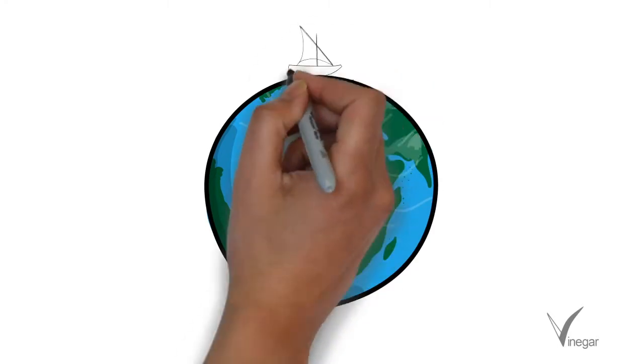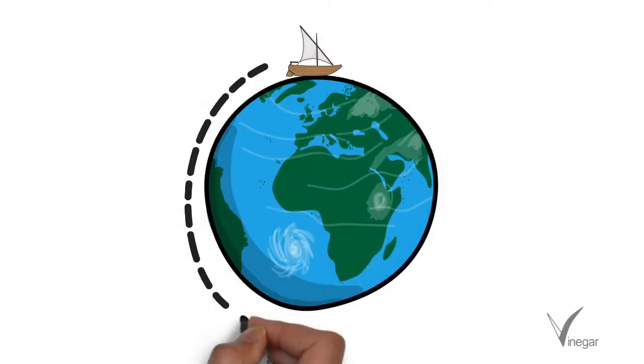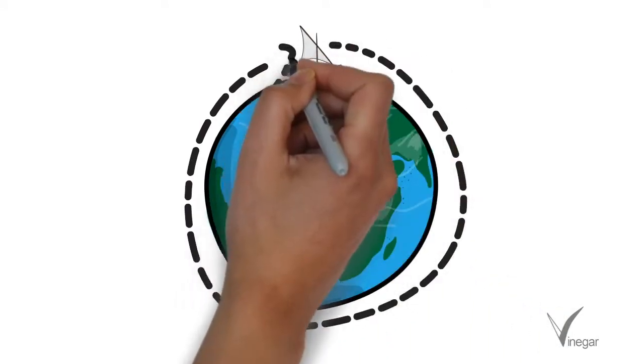One is the circumnavigation of earth. If we start from one point and keep sailing then we reach the same point. So this proved that earth is spherical.